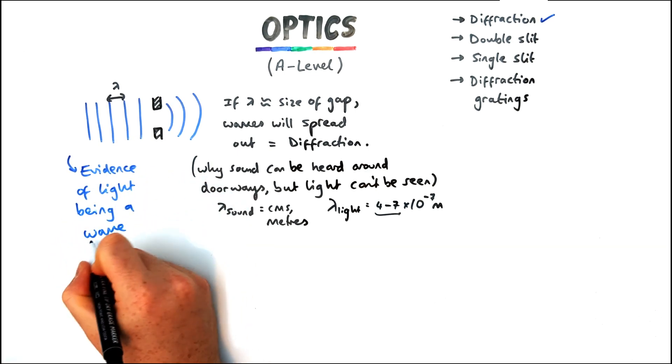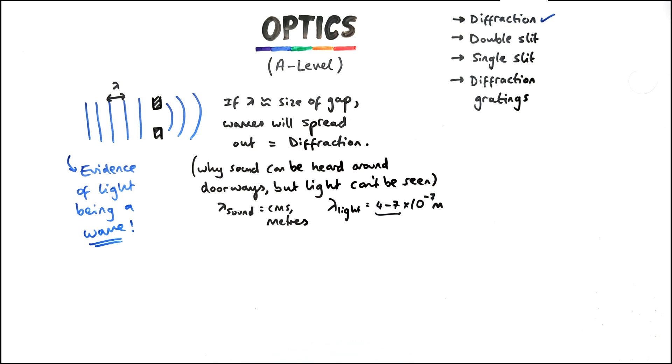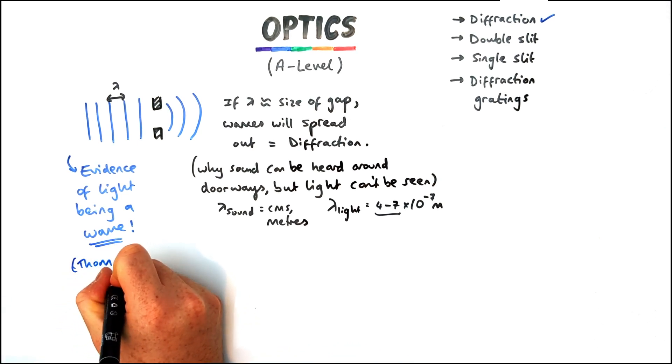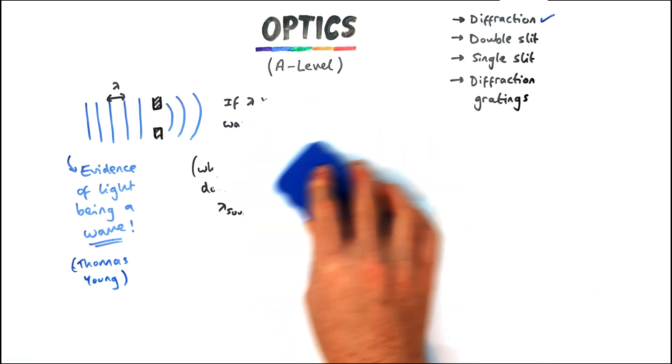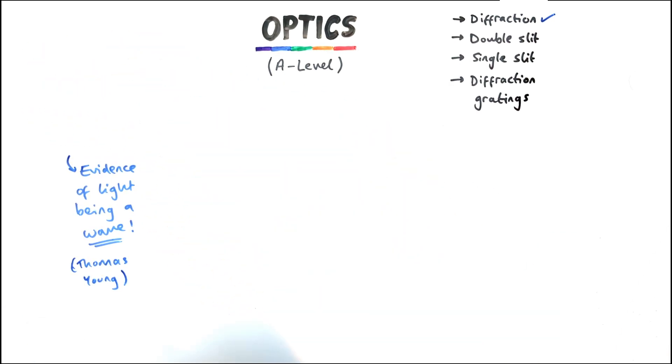Now this is a huge deal in the 1800s because this is evidence of light being a wave. The fact it can diffract. Only waves can diffract and particles cannot, which was one of the abiding theories at the time which eventually was revisited in quantum theory.